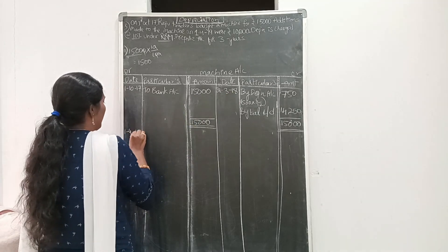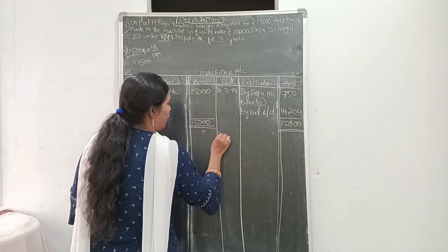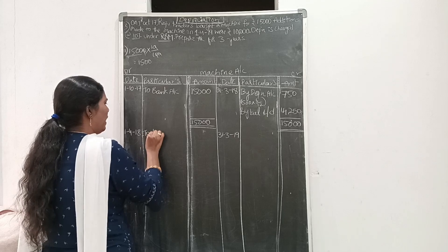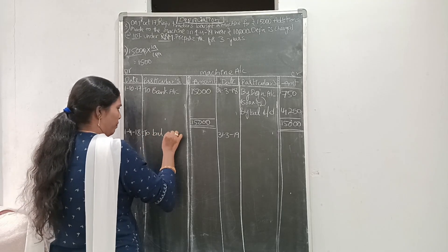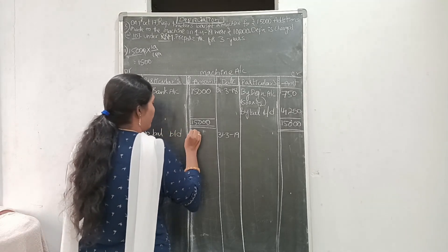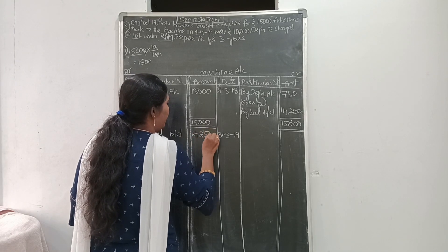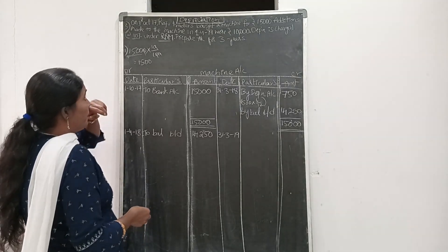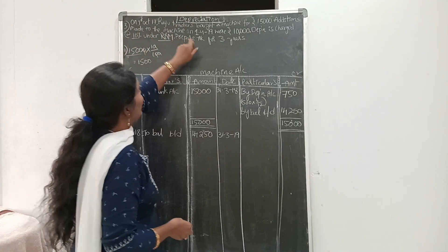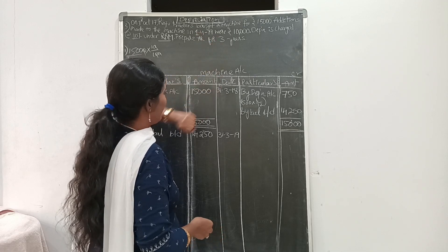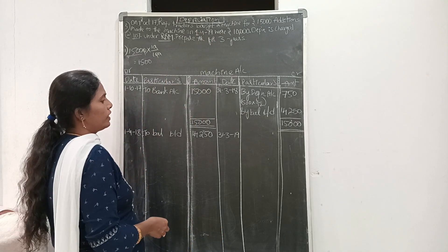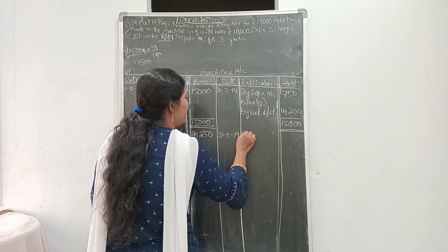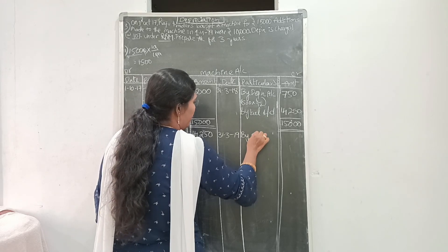For the second year, 31st March 2019. Balance brought down: 14,250 is the opening balance. In this year (2018–19), we provide depreciation on the first machine only, because the second machine is purchased on 1st April 2019 — which is the start of the next year.